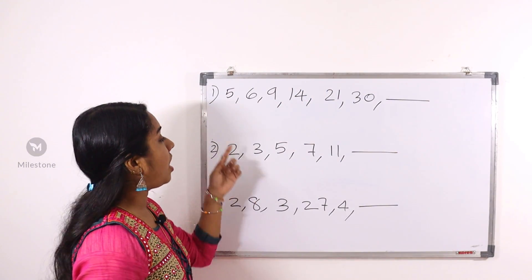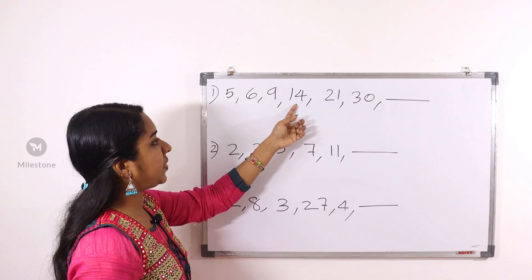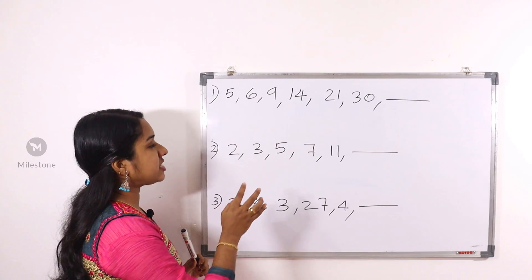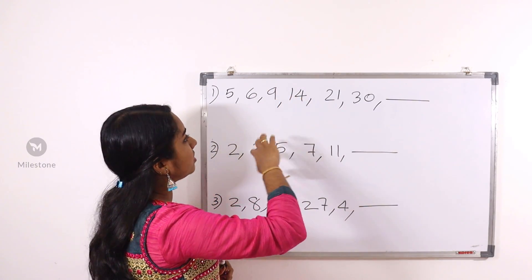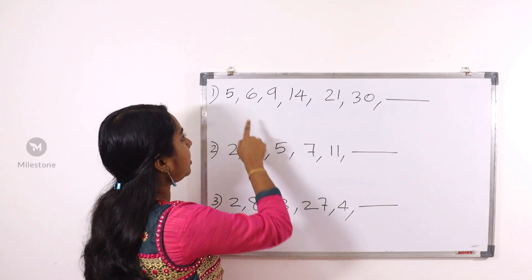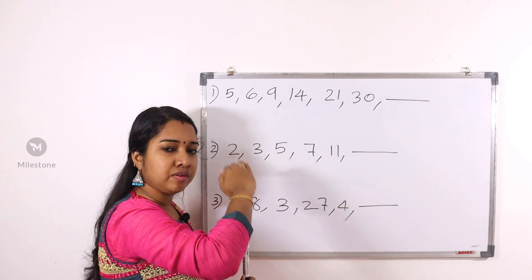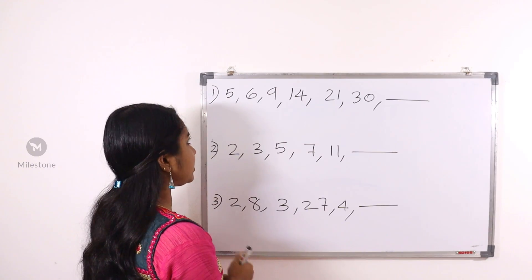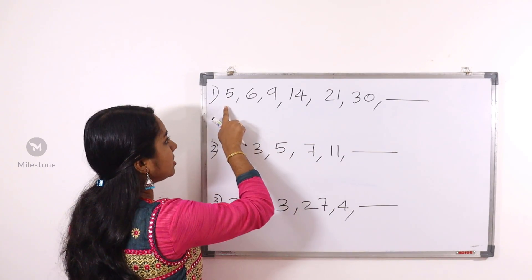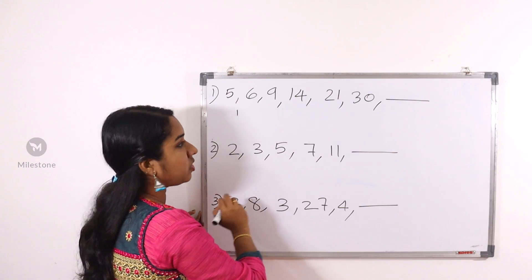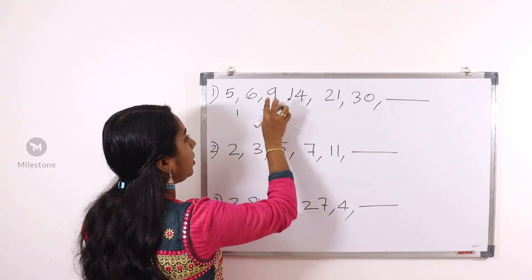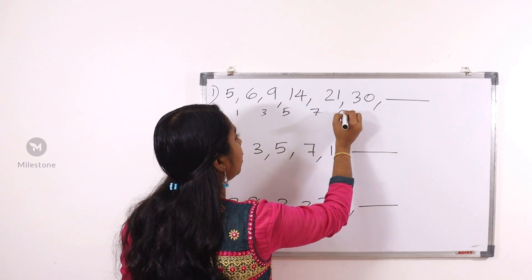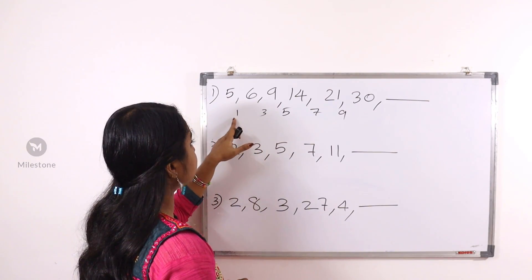The first question is: 5, 6, 80, 14, 21, 30, dash. If we have a few questions, we have a few questions. How many numbers are the same? 6 to 90 is 3, 9, 14, 5, 21, 7, 21, 30, 9. This is just a question. The numbers are the same: 1, 3, 5, 7, 9.